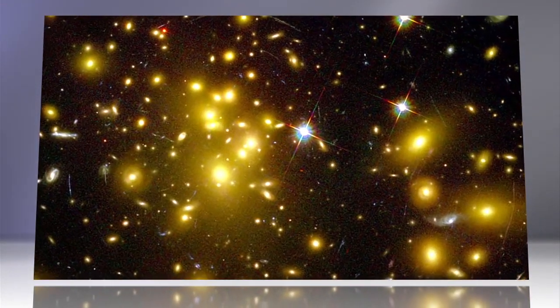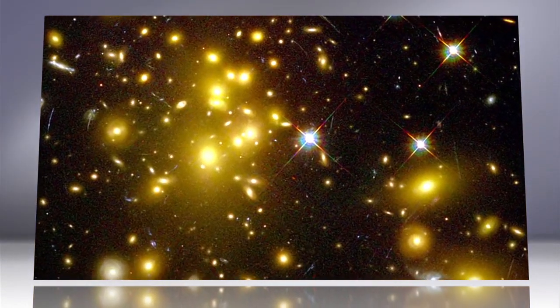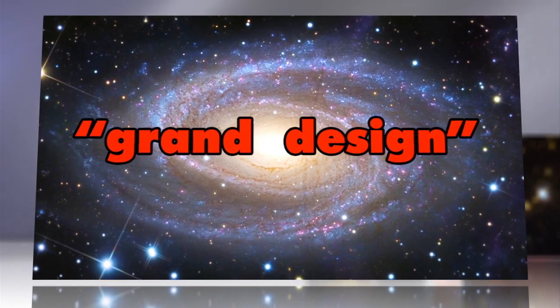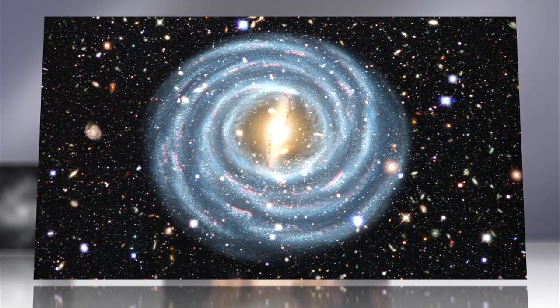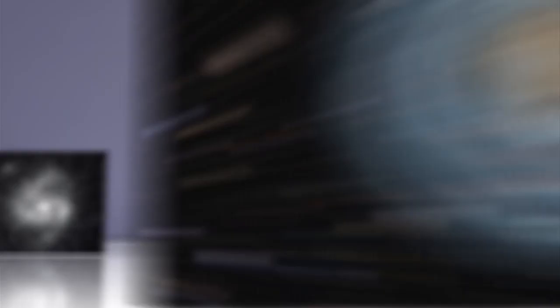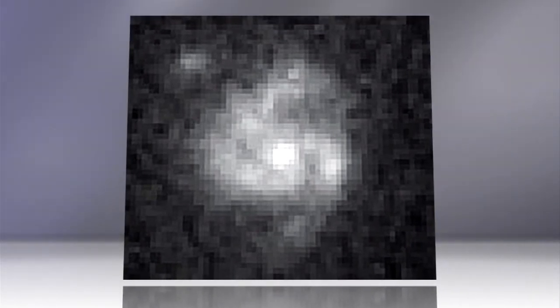Prevailing theory argues the early universe was way too energetic and chaotic to allow for the organized formation of what's called a grand design spiral galaxy like our own Milky Way. So why this elegant enigma in the ancient ether?